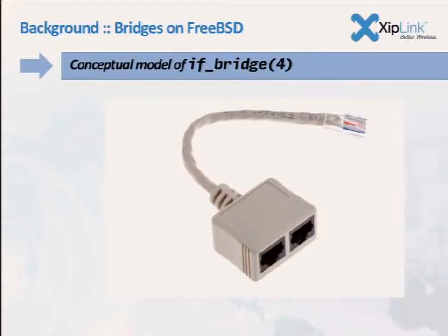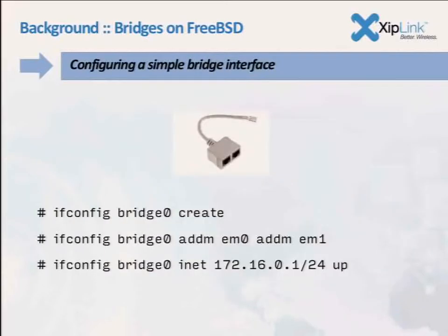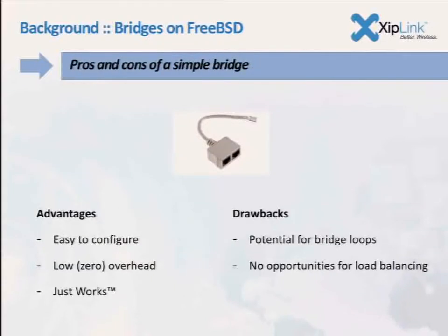When you do `ifconfig bridge0 create`, you basically instantiate one of these pieces of plastic, and `bridge0 addm` just creates more splits out of the piece of plastic. That's not a particularly smart model. The advantage is it's really easy to configure and has pretty much zero overhead. You just keep adding splits — your packets go in on one side and come out on all the other sides.